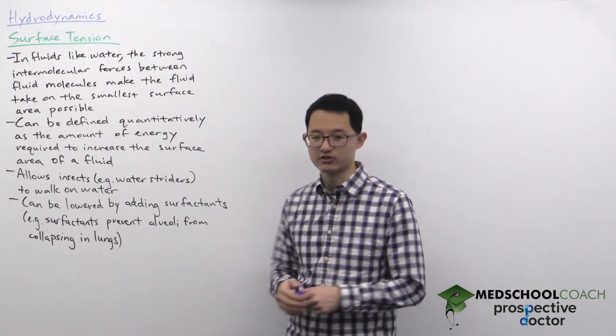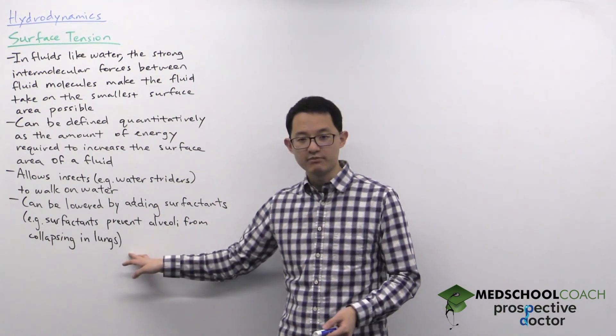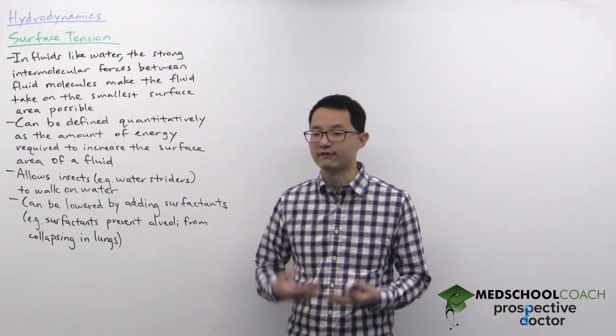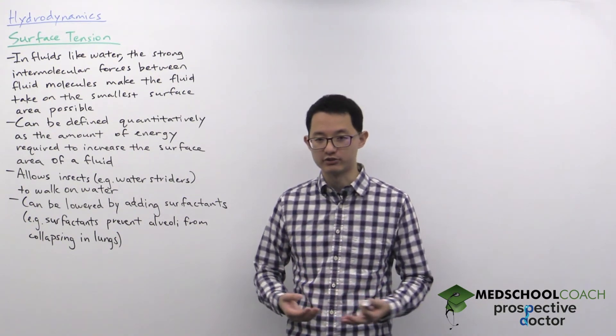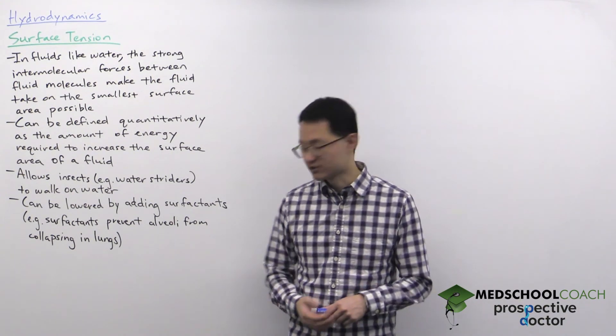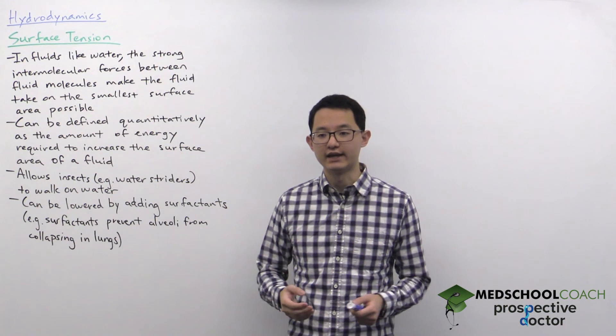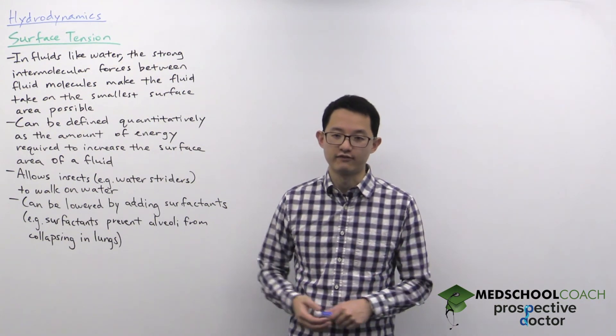Surfactants are essentially soaps, and a biological example of surfactants is the lungs. Within our alveoli we have type 2 alveolar cells that produce surfactants. The surfactants are important for reducing the surface tension in the alveoli, and this prevents alveoli from collapsing.